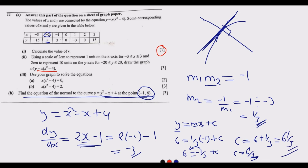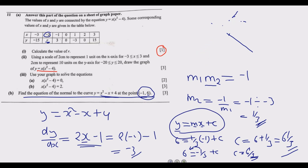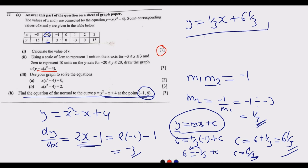Substituting back into the equation, we find y = (1/3)x + 6⅓. This is the equation of the normal to the curve y = x² - x + 4 at the point (-1, 6). That is how you answer Question 11.